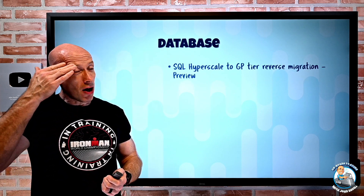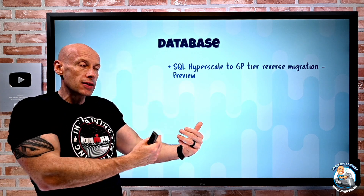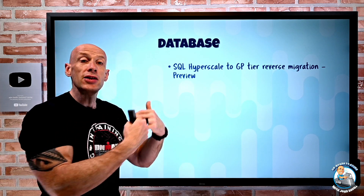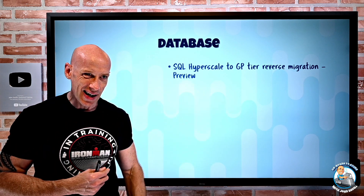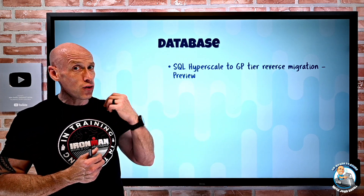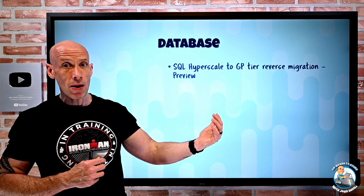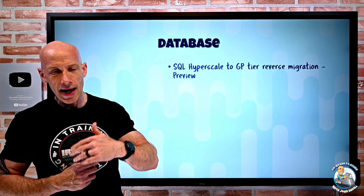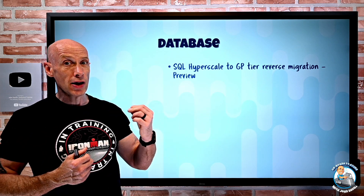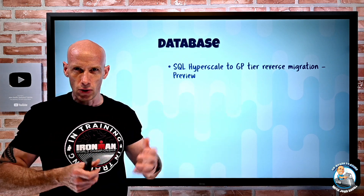On the database side, you can now reverse migrate from SQL Hyperscale to the General Purpose tier. The idea is if you migrated to Hyperscale and want to go back, you have to do this within 45 days of migrating to Hyperscale. If you originally created it as Hyperscale, you cannot do it — it must be a migration back. You can only reverse migrate to General Purpose, and from there you could go to Business Critical or something else.